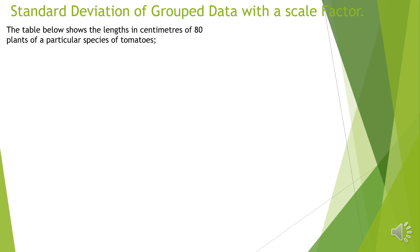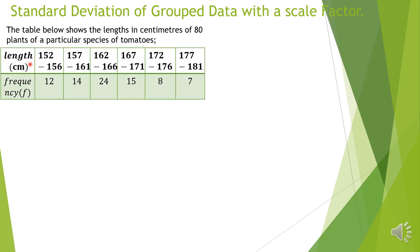The table below shows the length in centimeters of 80 plants of a particular species of tomatoes. You are given the length in centimeters and the respective classes — the data is grouped into six classes — and the respective frequencies are also given. From this table, the question asks you to calculate the standard deviation from the given data.